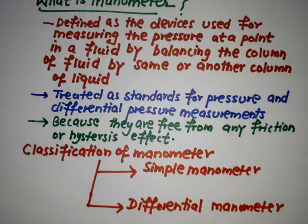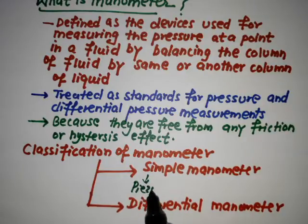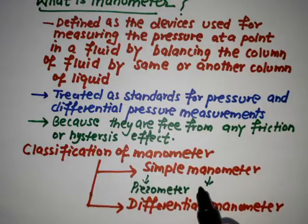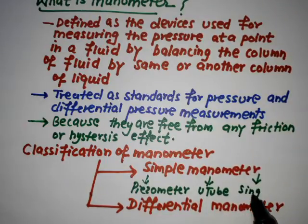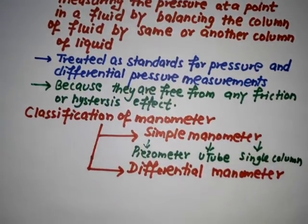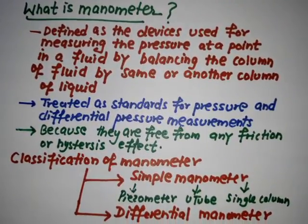And there are further category of the simple manometer. Simple manometer - these are basically the piezometer, U-tube manometer, and single column manometer. So all these device types - simple manometer, piezometer, U-tube, single column - these we will discuss in our next video.